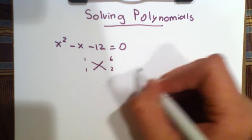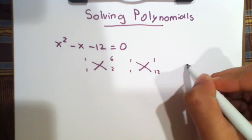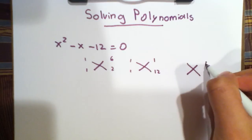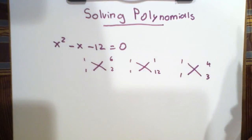But there are more possibilities: 1 and 12, and also 4 and 3, because 4 times 3 makes 12. Let's experiment with these.